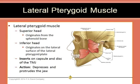The lateral pterygoid muscle consists of a superior and inferior head. The superior head originates from the sphenoid bone, and the inferior head originates on the lateral surface of the lateral pterygoid plate. It inserts on the capsule and disc of the temporomandibular joint. Its action is to depress and protrude the jaw. The lateral pterygoid muscle is the only muscle of mastication that opens the jaw, and it is also innervated by the mandibular nerve.